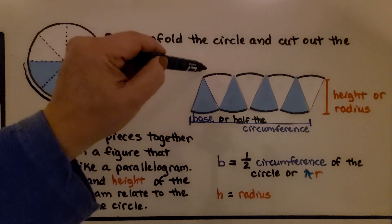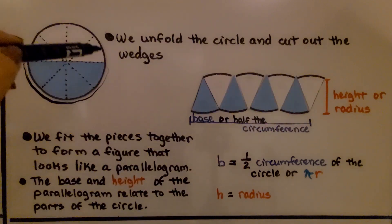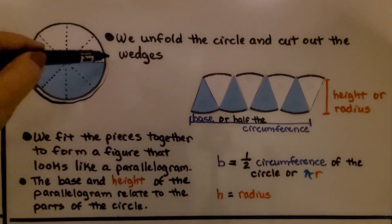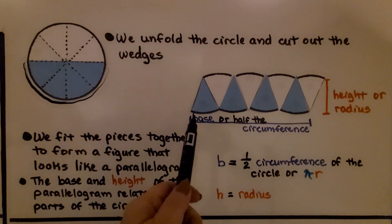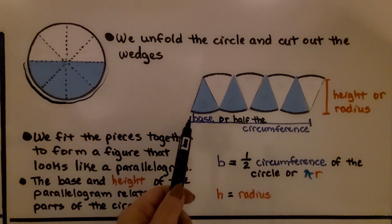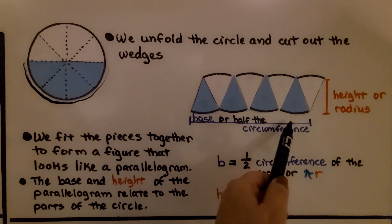And then here's another half, isn't it? It's the top white part. That's the other half of the circumference. So the base of our parallelogram is half the circumference of the circle.